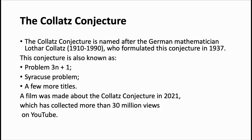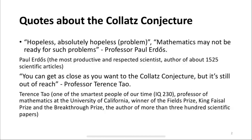The Collatz conjecture is named after the German mathematician Lothar Collatz, who formulated this conjecture in 1937. Professor Paul Erdős called it 'Absolutely hopeless,' saying mathematics may not be ready for such problems. Professor Terence Tao noted you can get as close as you want to the Collatz conjecture, but it's still out of reach.